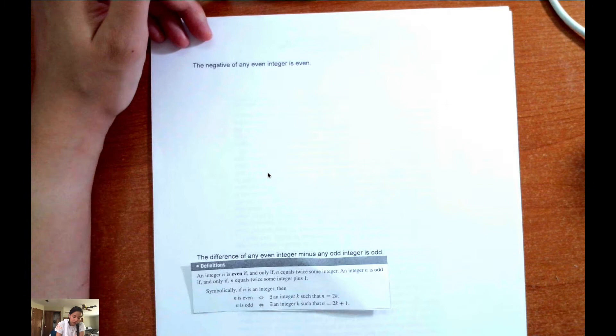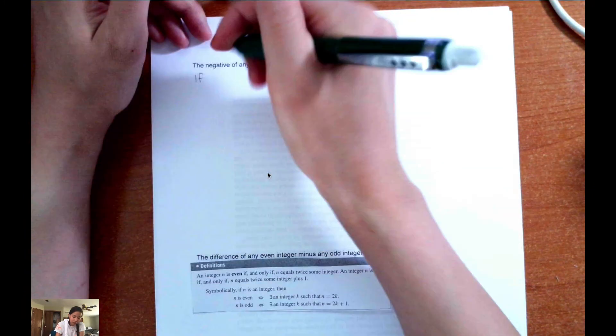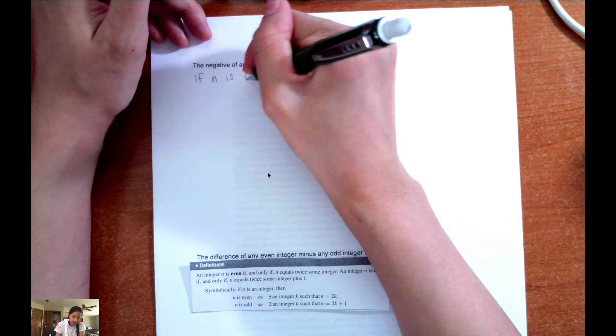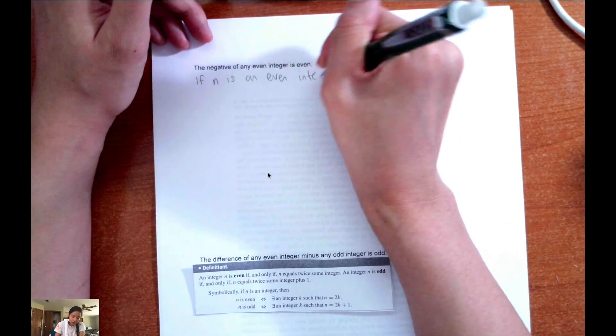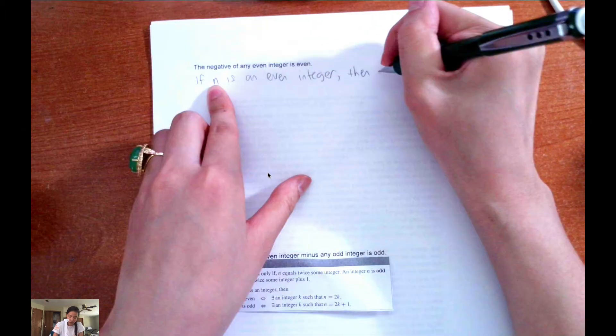So I would write, if n is an even integer, then the negative of n is even.